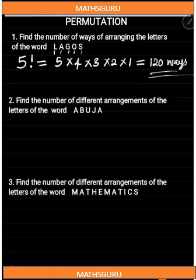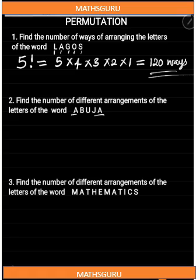Let's move to the second question: find the number of different arrangements of the letters of the word Abujaan. Like Lagos, Abujaan has five letters. But if we take a good look at this, we have a letter which is repeated — A at the beginning and A at the end. So we are going to consider first the letters of this word as though they are all distinguishable, that is each letter stands on its own. So we do that in five ways, which is five factorial.